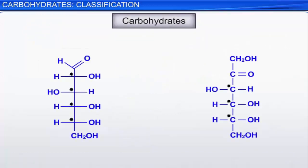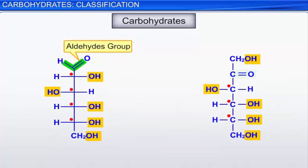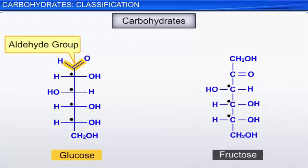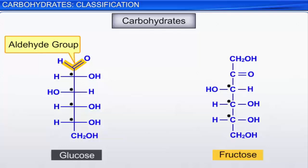To be more precise, we will define carbohydrates as optically active polyhydroxy aldehydes or ketones, or compounds that produce such units when hydrolyzed. For example, glucose is a polyhydroxy aldehyde, while fructose is a polyhydroxy ketone.